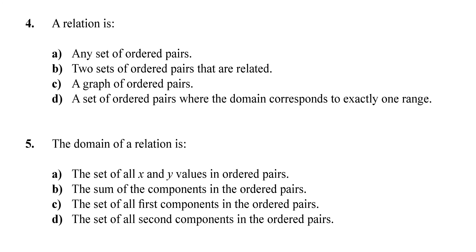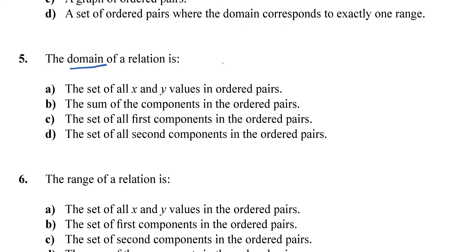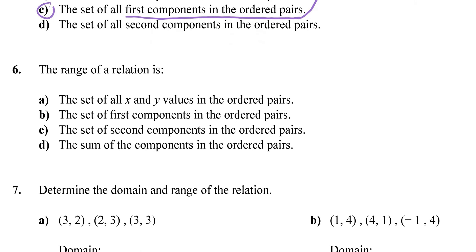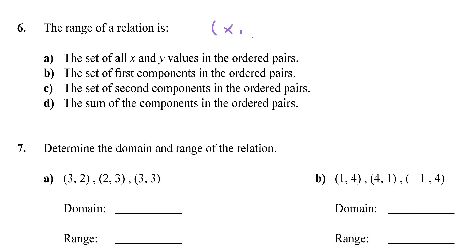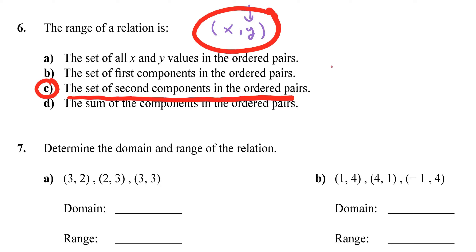For question 4, a relation is any set of ordered pairs, like 3 comma 2 or 4 comma 6. The domain is all the first values — the X values — in the ordered pairs. The range is all the second values — the Y values — in the ordered pairs.